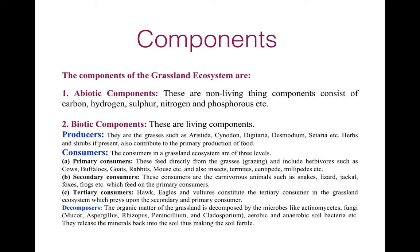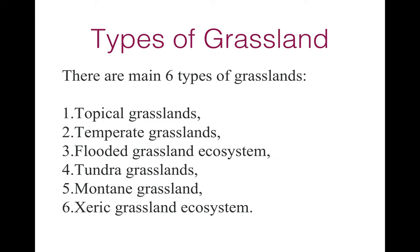These are the biotic components, which include producers, consumers, and decomposers. There are mainly six types of grasslands in the world: tropical grassland, temperate grassland, flooded grassland, tundra grassland, mountain grassland, and xeric or desert grassland ecosystem.